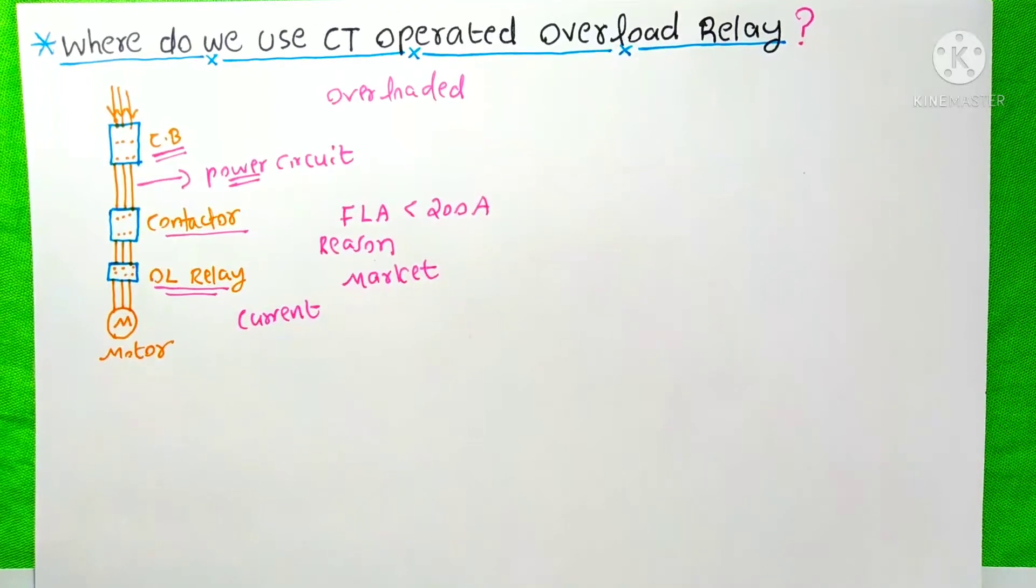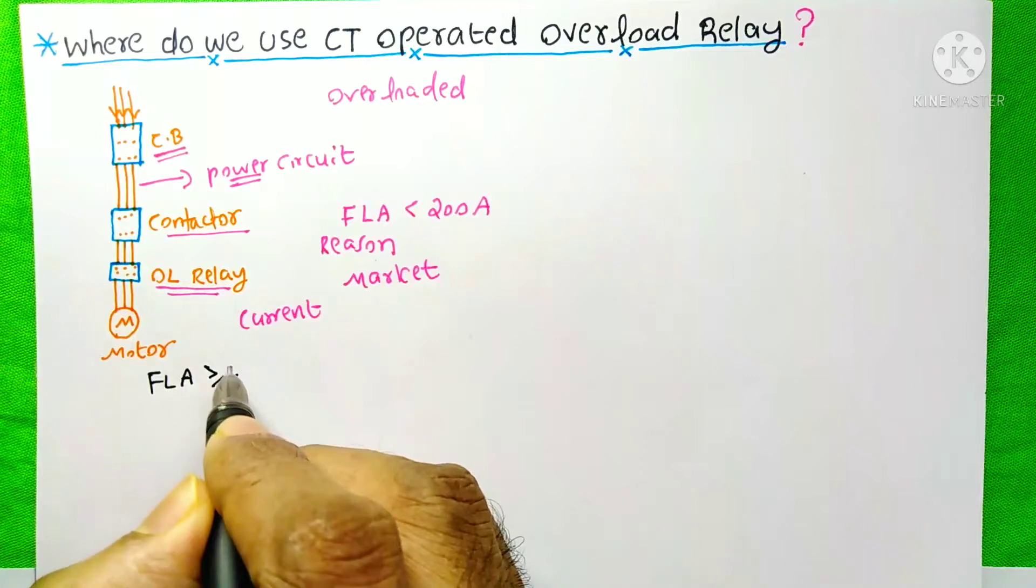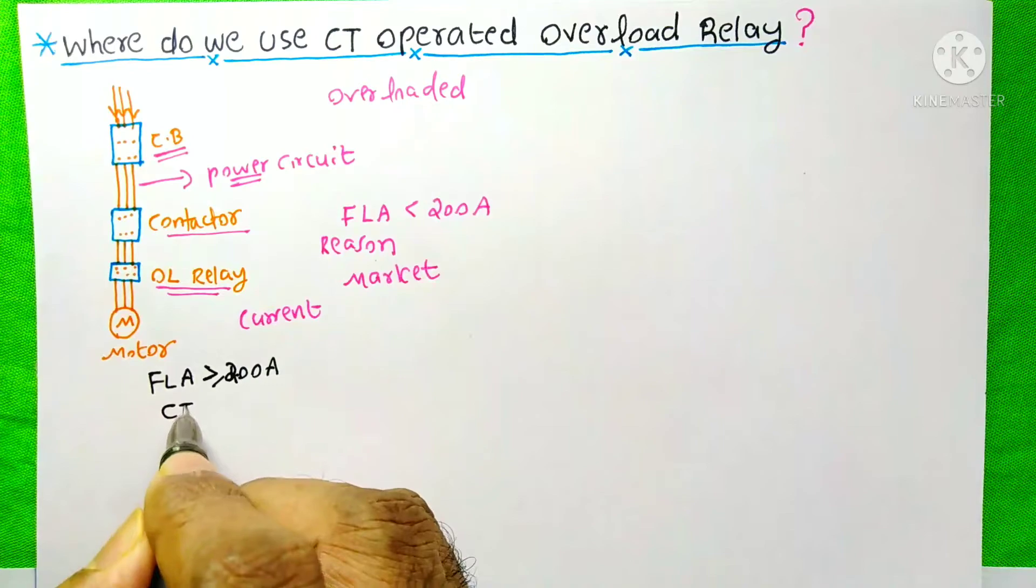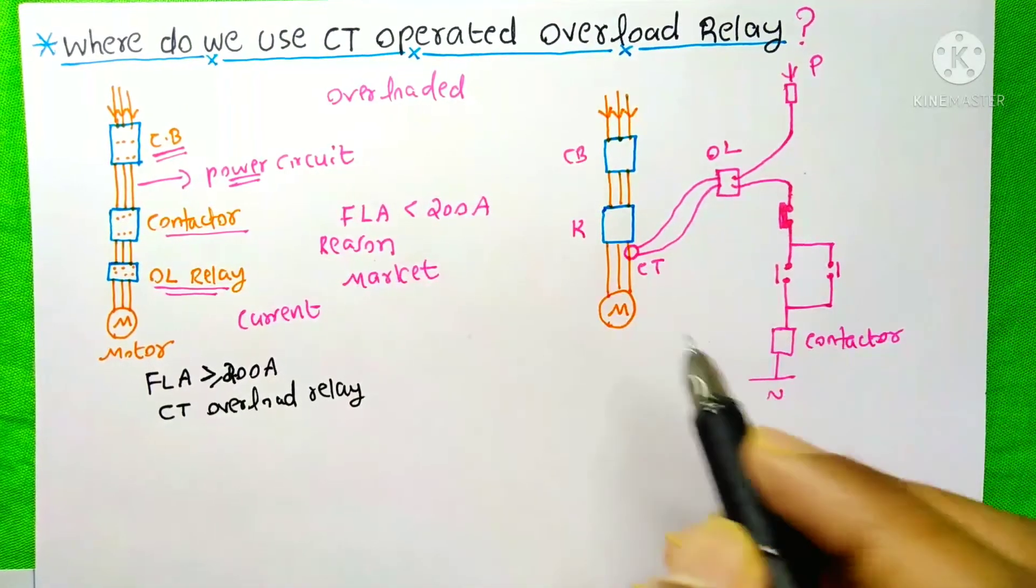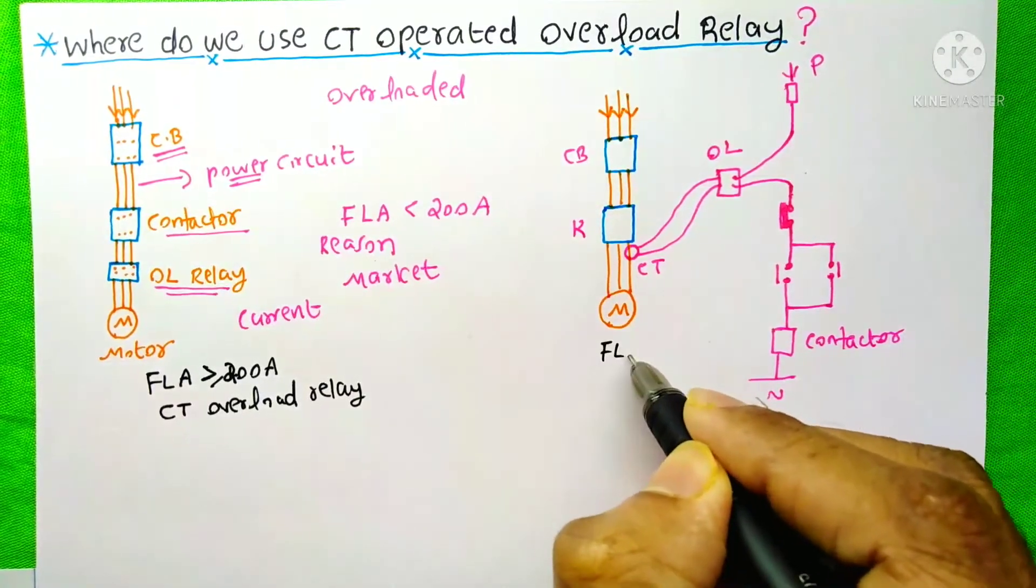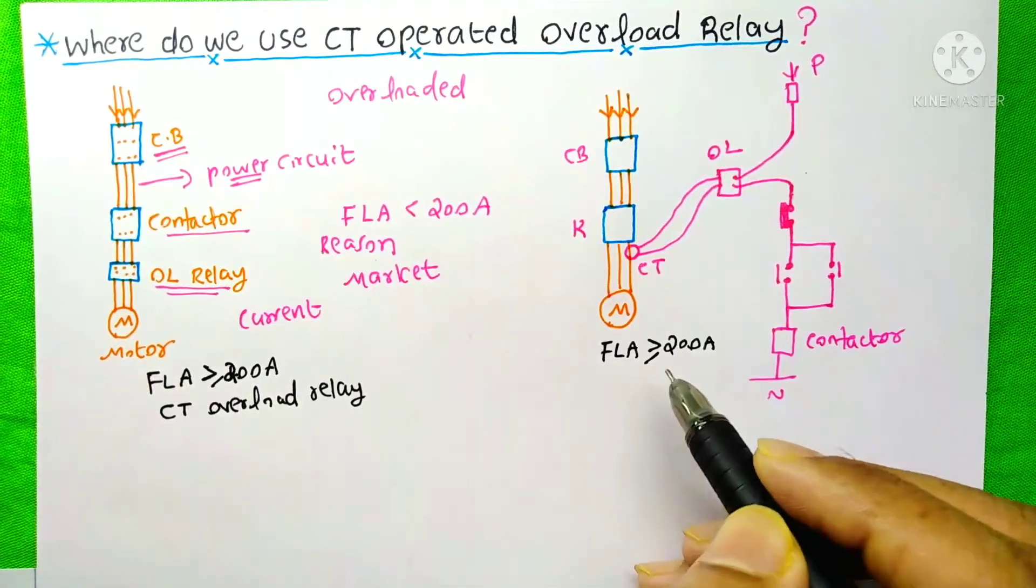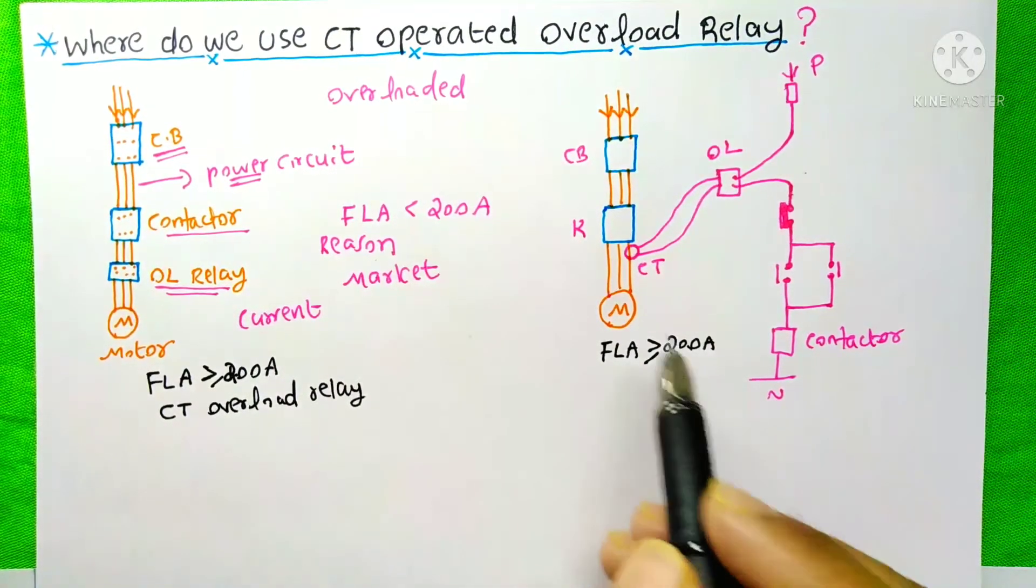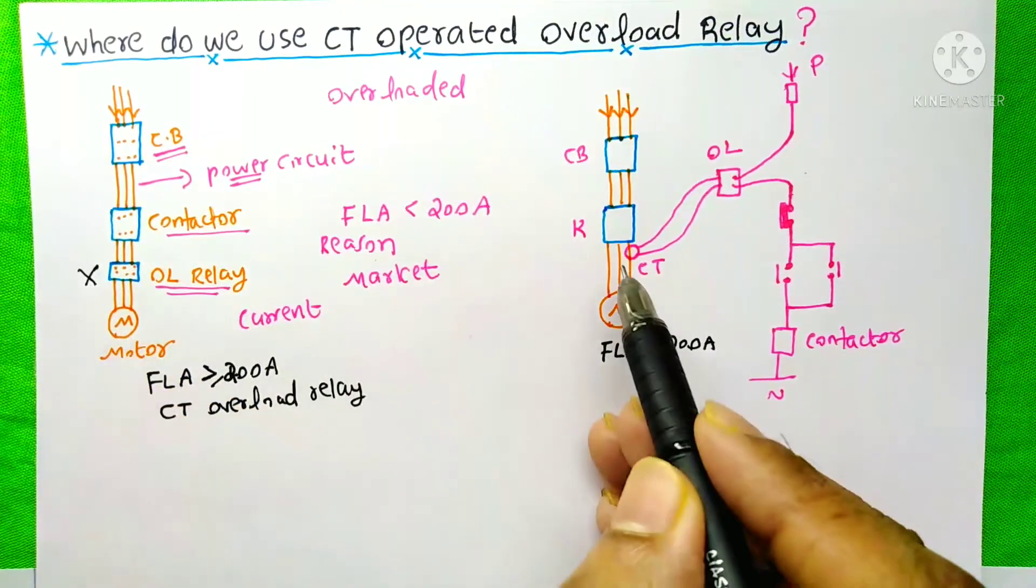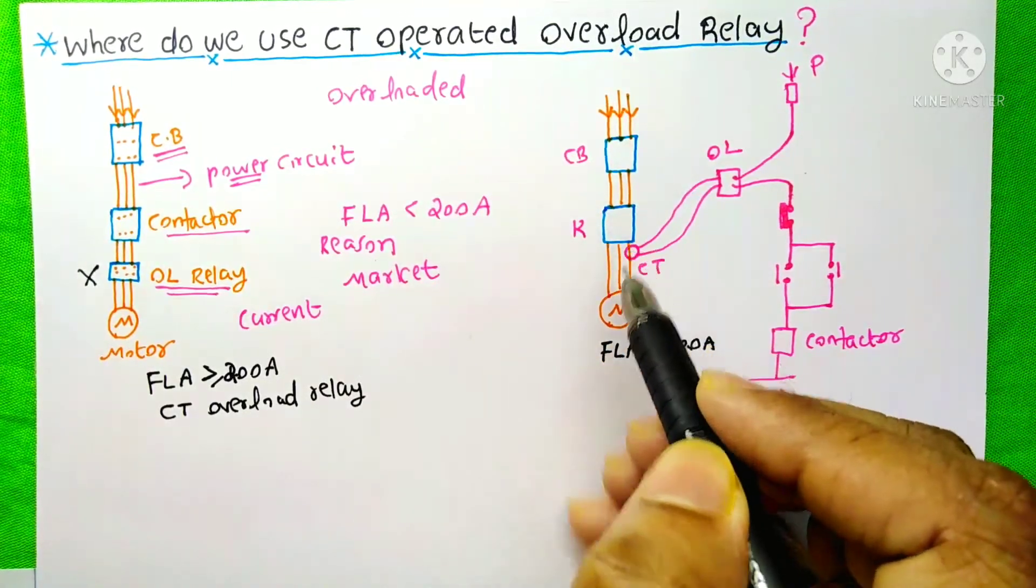Suppose our motor consumes the full load ampere greater than or equal to 200 ampere, we will not use this overload relay in the power circuit. In this case, see, here only circuit breaker and contactors are present on the power circuit.